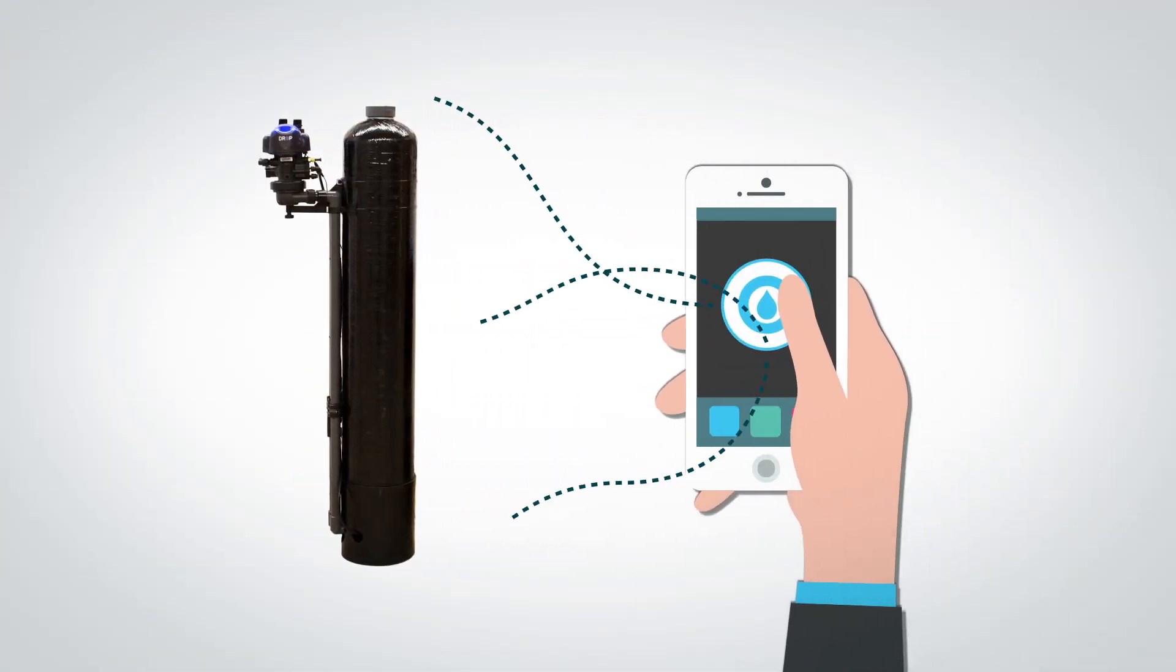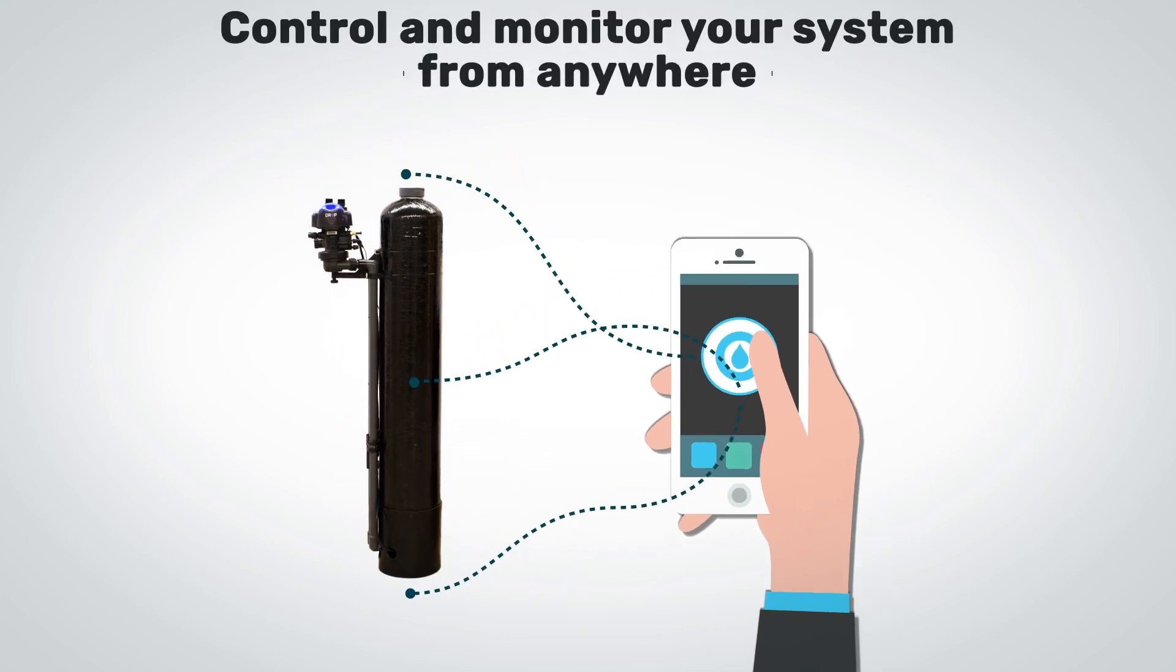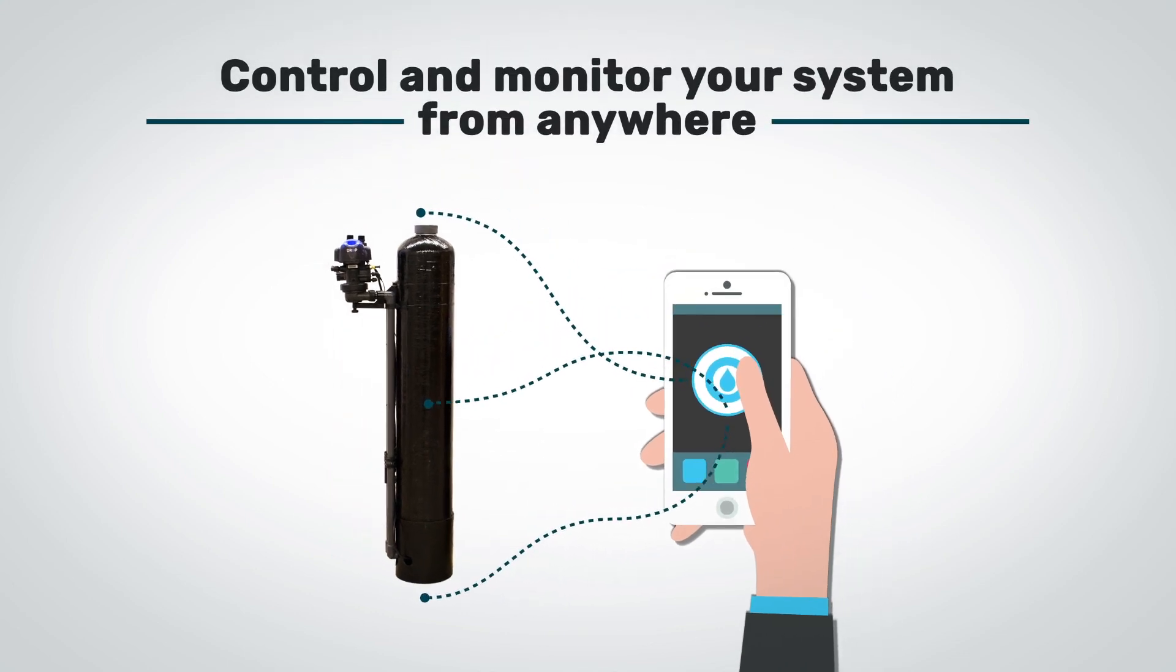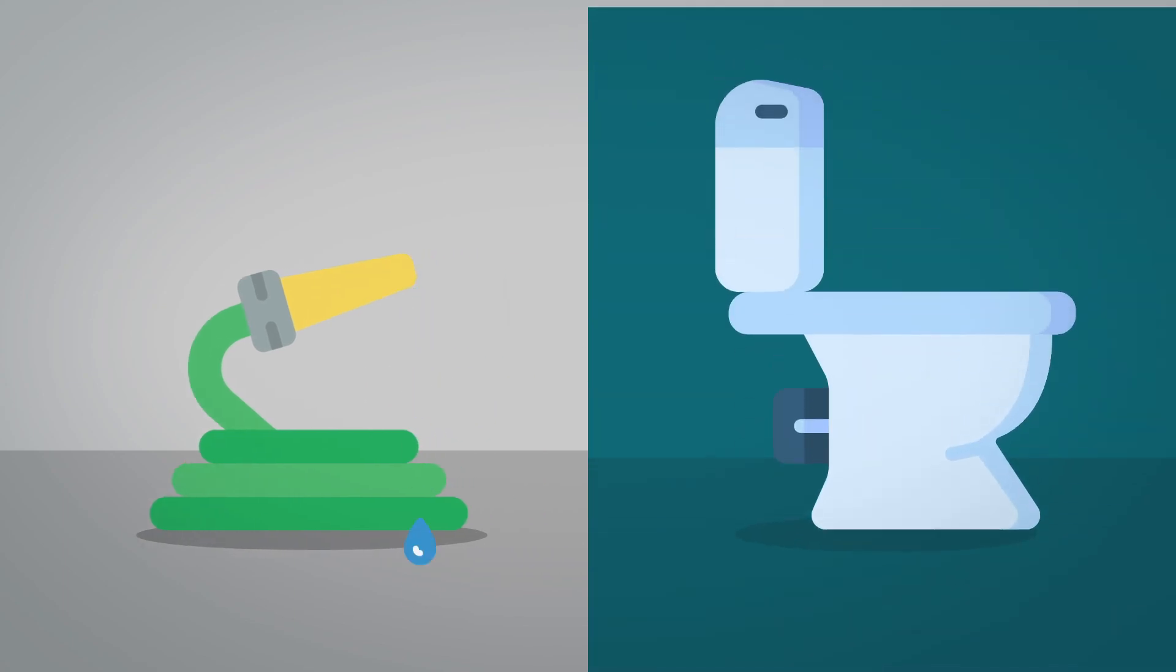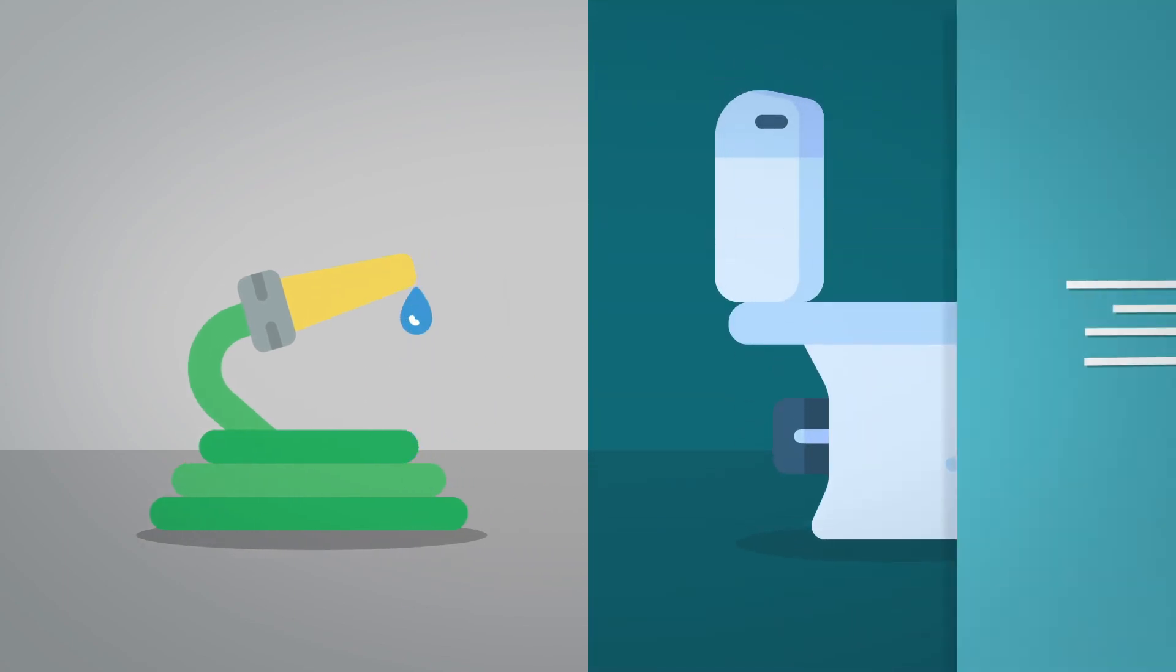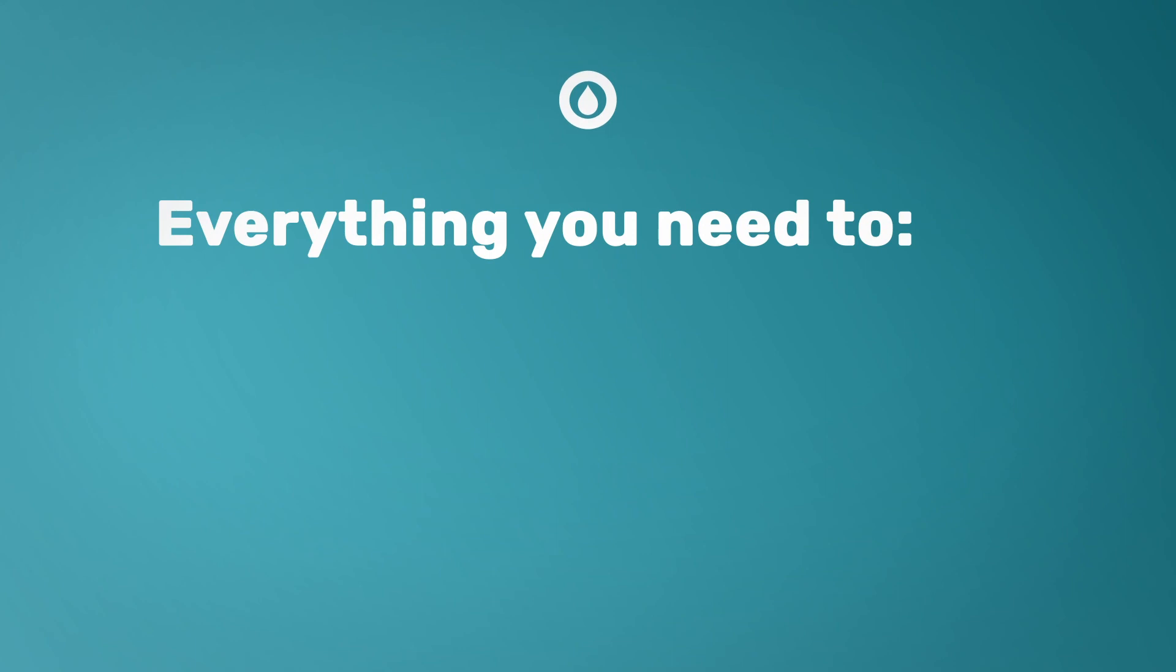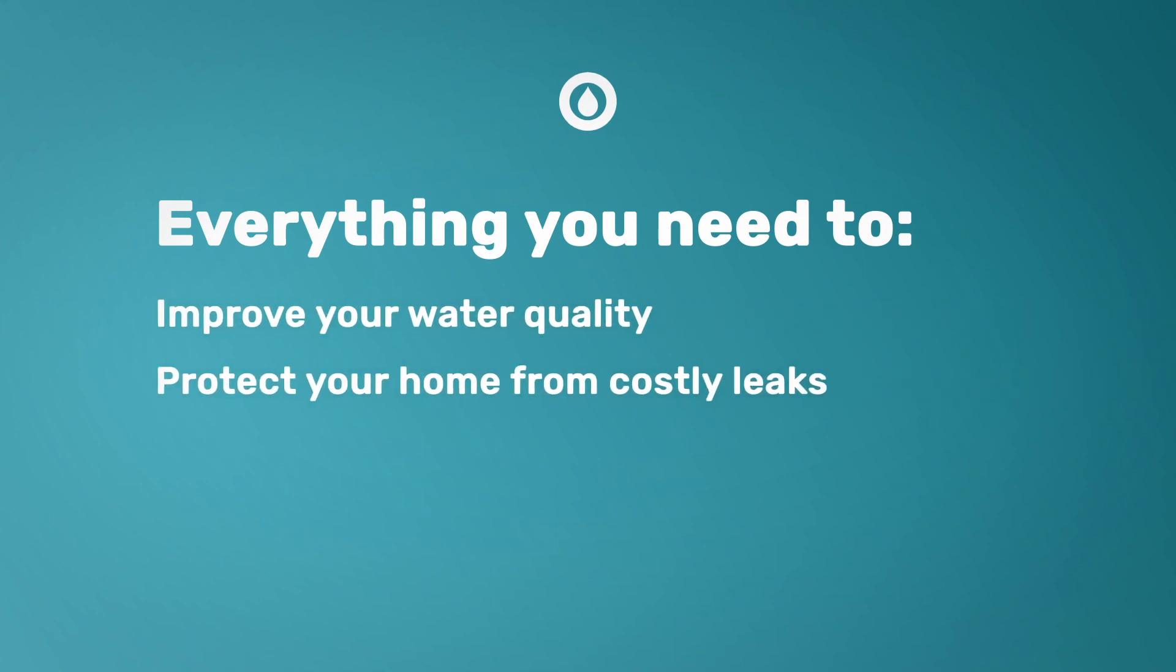With a DROP aeration filter, you'll be in total control of your water system and able to monitor your water quality from anywhere. If someone leaves a garden hose running or you have a malfunctioning toilet, you'll know it. The DROP aeration filter provides everything you need to improve your water quality, protect your home from costly leaks, and conserve water, which is great for the environment and saves you money.